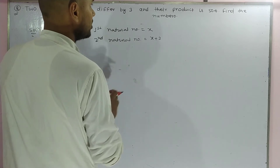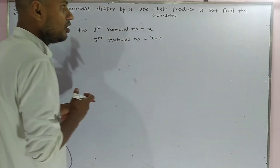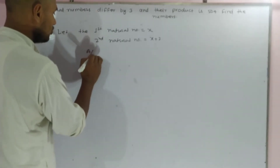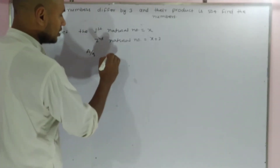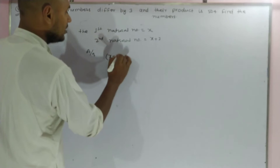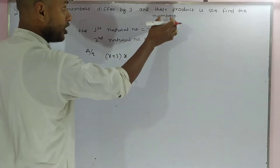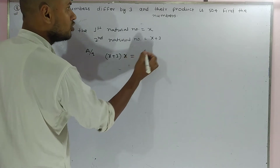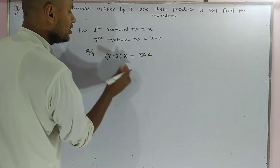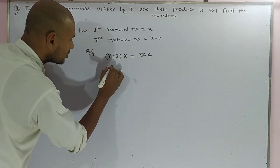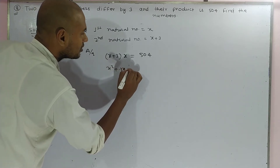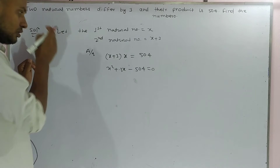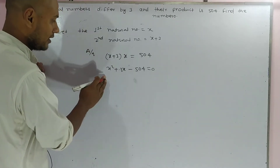The question tells us that their product is 504. Find the numbers. So according to the question, you can write x plus 3 multiplied by x equals 504. If you multiply these, x squared plus 3x minus 504 equals 0. This gives us a quadratic equation, and if you solve this, you get the answer.